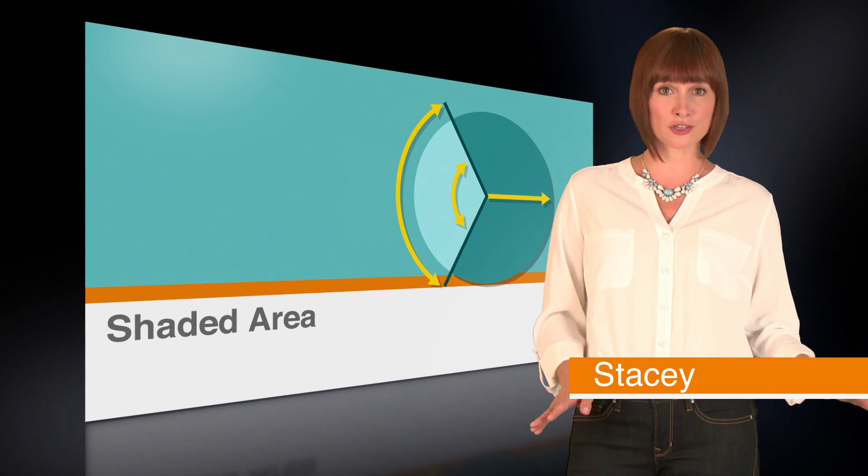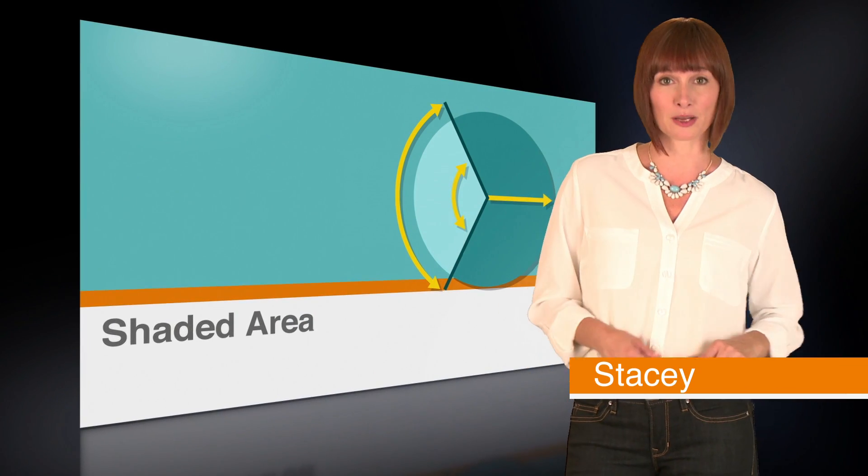This lesson is all about throwing shade, well, at least when it comes to shapes. But don't be worried. Shaded area problems are actually just subtraction problems. We'll start by finding the area of a large shape, and then subtract the area of another shape to figure out the shaded area.